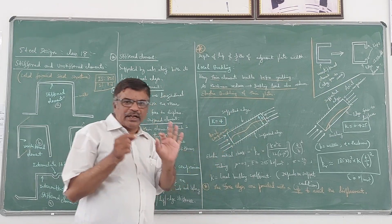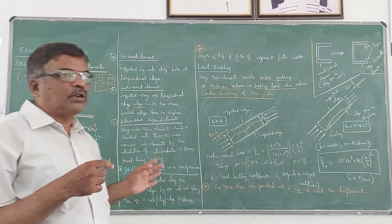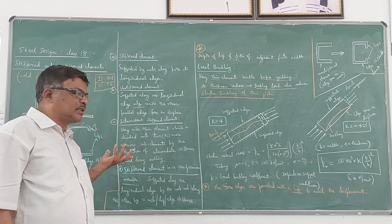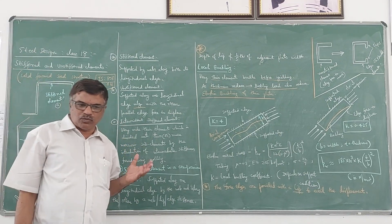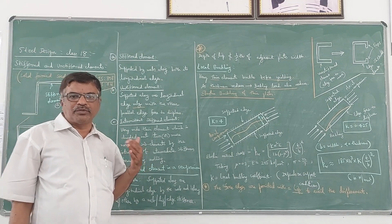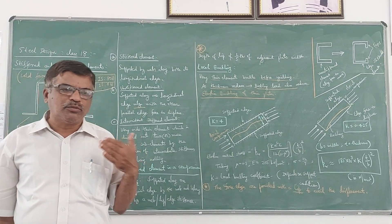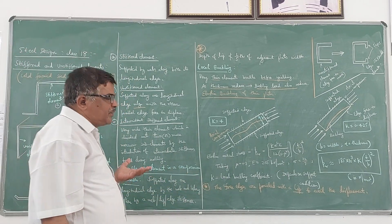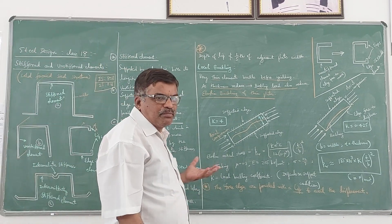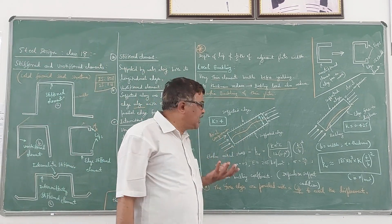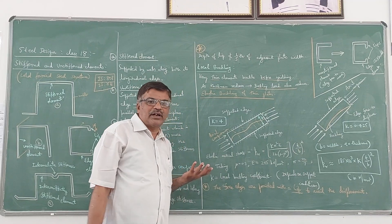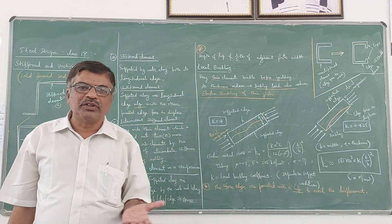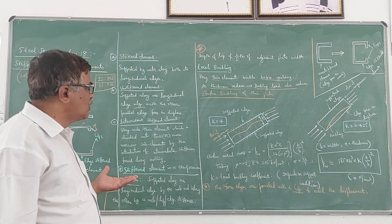Normally in the case of cold-formed steel structures, thickness is 1mm, 2mm, 3mm — at the most it can be 5mm. That is why they are treated as thin plates only. The behaviour of plates under compression holds good in the case of cold-formed sections also.